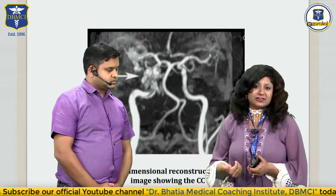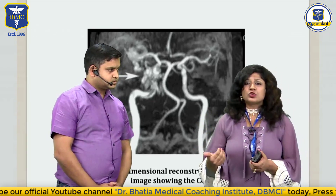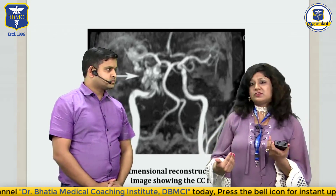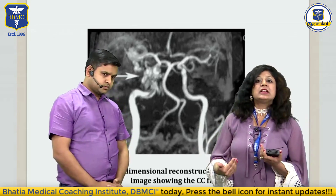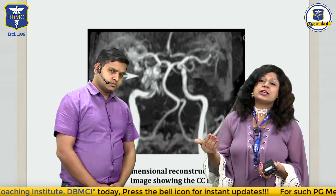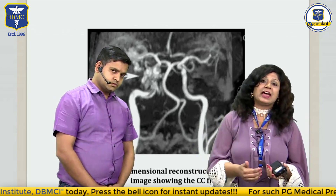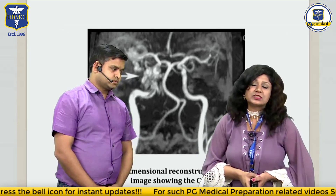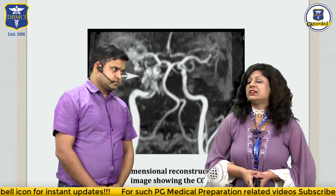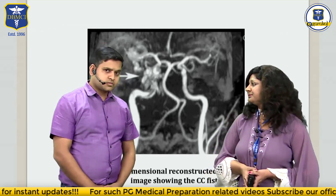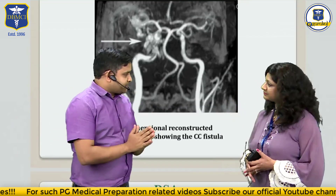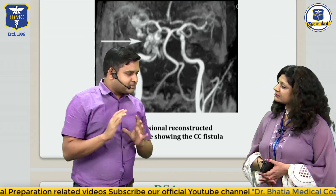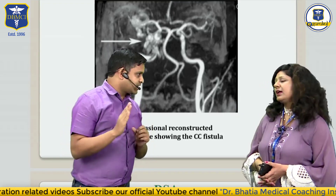For indirect fistulas, you just need to occlude the tear between the branches and the cavernous sinus. Trans-arterial approaches are usually preferred for direct fistulas, while trans-venous approaches are preferred for indirect fistulas. So ultimately the treatment is primarily surgical or endovascular in this case.